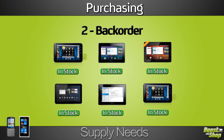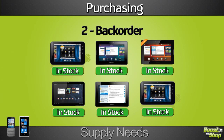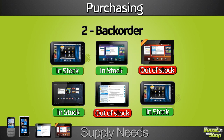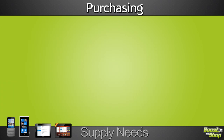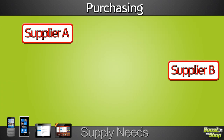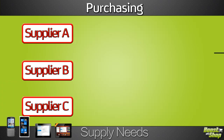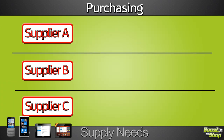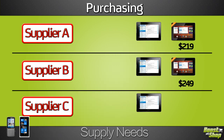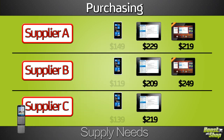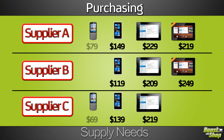Back orders: when a customer purchases an out-of-stock product, it's automatically added to the supply needs so you know what products you must order in priority. You can filter the supply needs grid by manufacturer or supplier to easily get a summary of all the purchases needed.